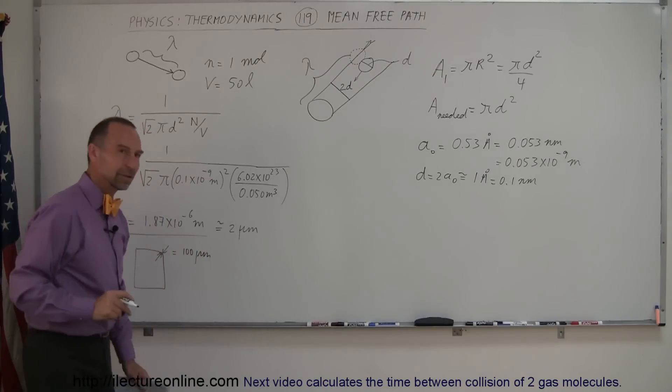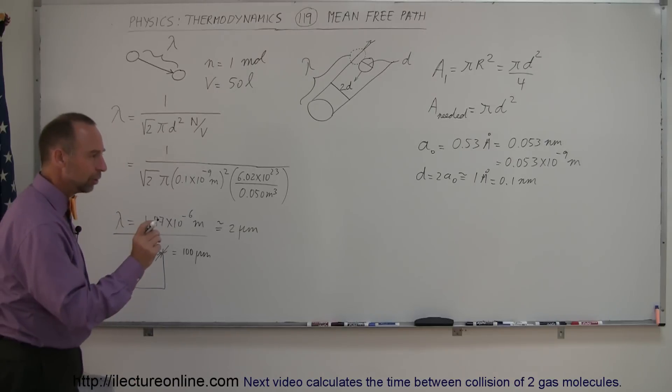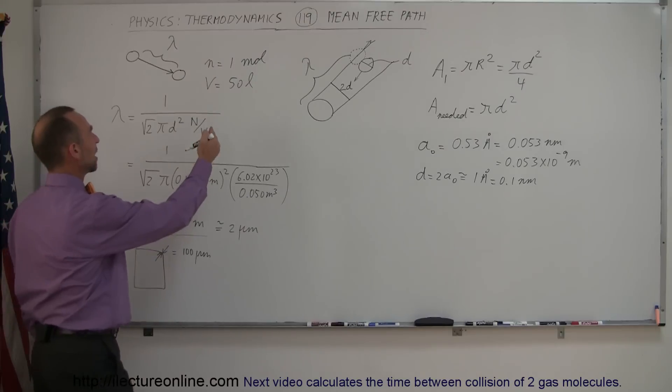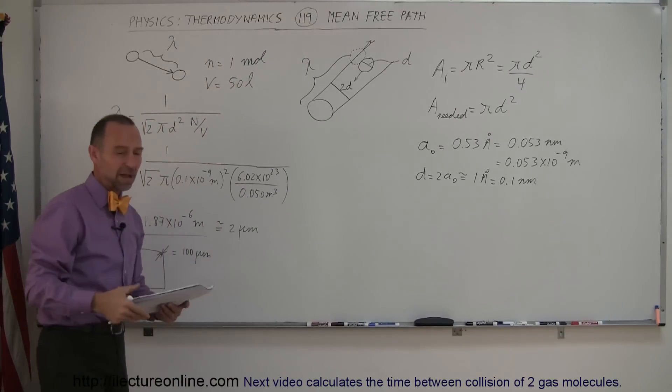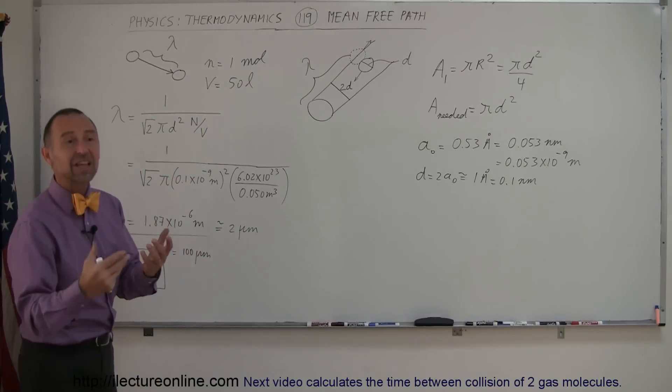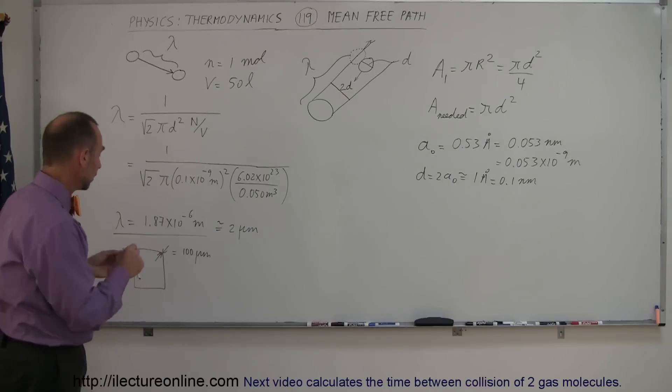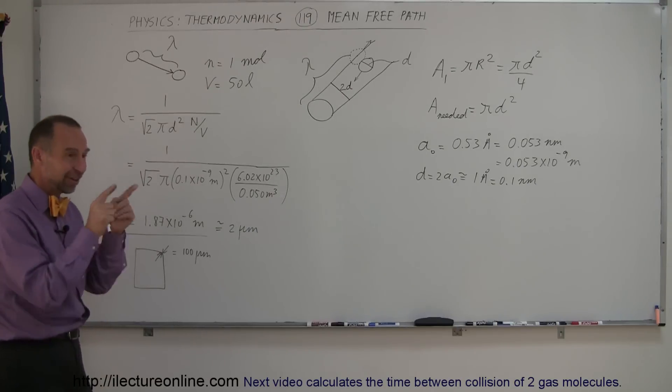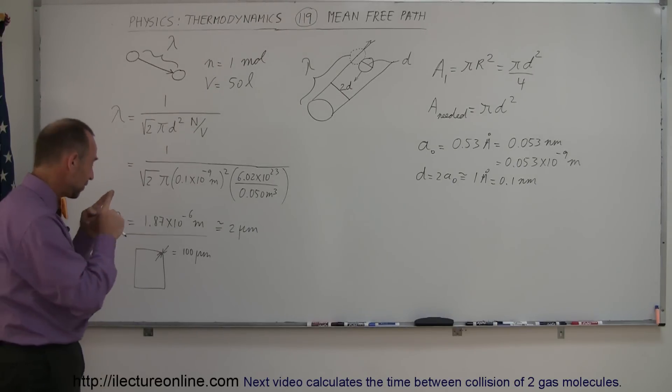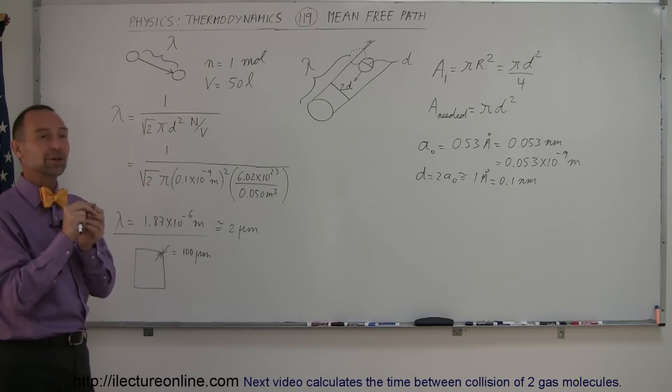And so a molecule, in this situation where we have 1 mole in 50 liters, which is about typically half the density of a typical room, the molecules will travel 1/50th the width or the thickness of a piece of paper before they collide with another molecule.